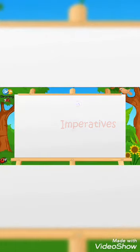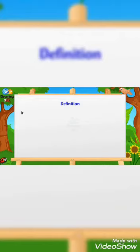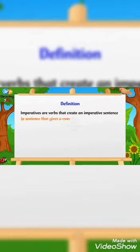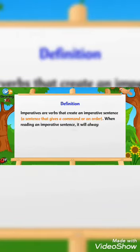Imperatives. Definition: Imperatives are verbs that create an imperative sentence — a sentence that gives a command or an order. When reading an imperative sentence, it will always sound like the speaker is bossing someone around.